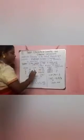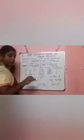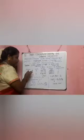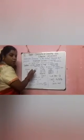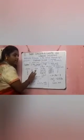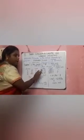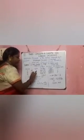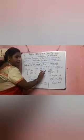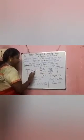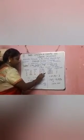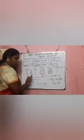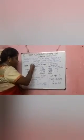Next, find the relative number of molecules. The relative number of molecules is calculated as percentage divided by atomic mass. So for carbon: 40 divided by 12 equals 3.3. For hydrogen: 6.6 divided by 1 equals 6.6. For oxygen: 53.4 divided by 16.